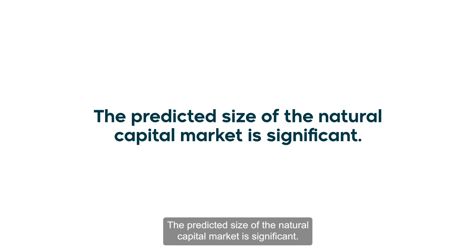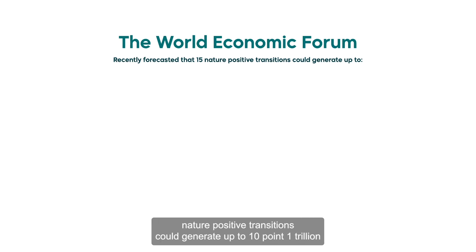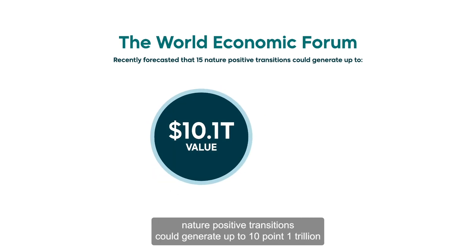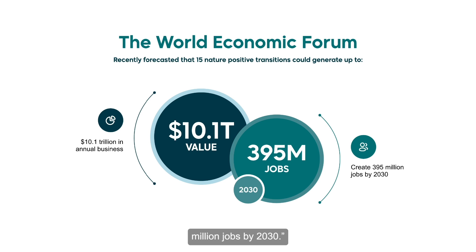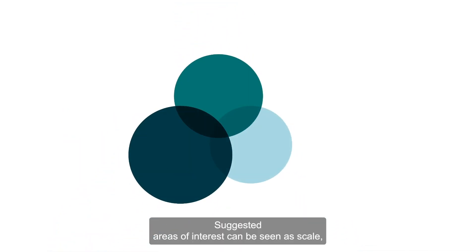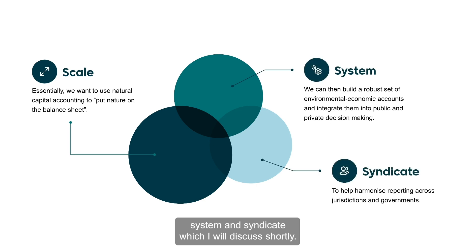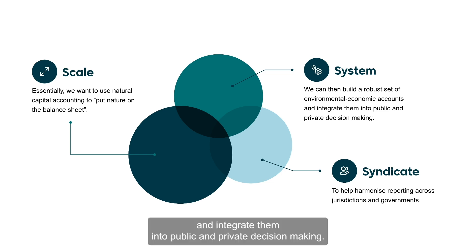The predicted size of the natural capital market is significant. The World Economic Forum recently forecasted that 15 nature-positive transitions could generate up to $10.1 trillion in annual business value and create 395 million jobs by 2030. But how do we connect to this market that we're transitioning towards? Essentially, we want to use natural capital accounting to put nature on the balance sheet. We can then build a robust set of environmental economic accounts and integrate them into public and private decision making to help harmonise reporting across jurisdictions and governments.